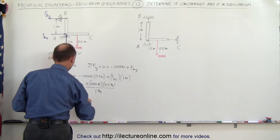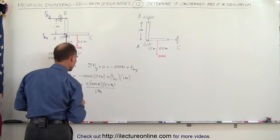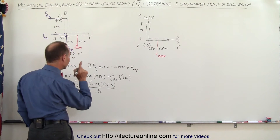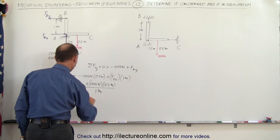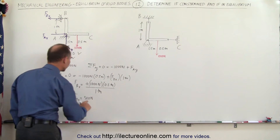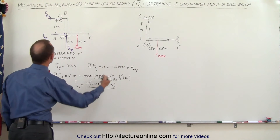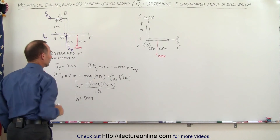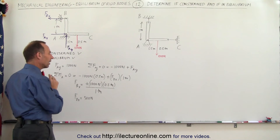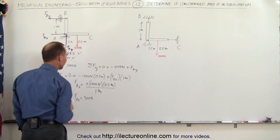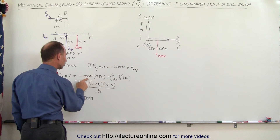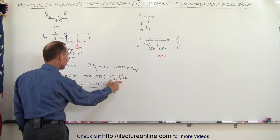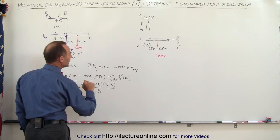This is interesting — the magnitude is 500 newtons, but the direction is negative. We need to be careful here: F sub B is in the negative direction, so we have to account for that sign in our moment equation.